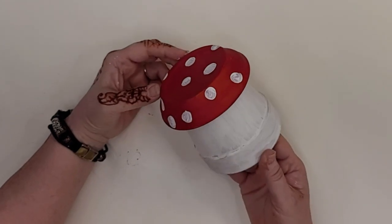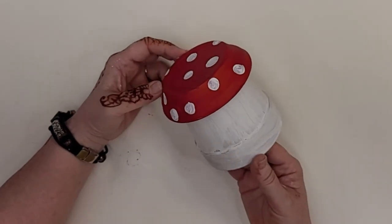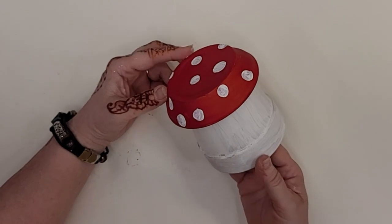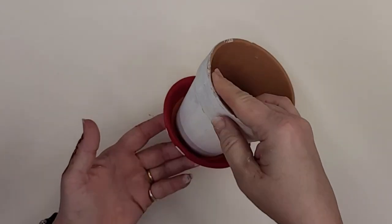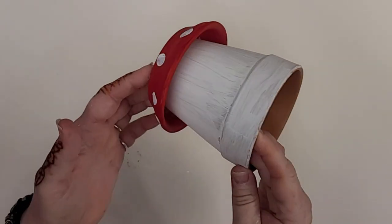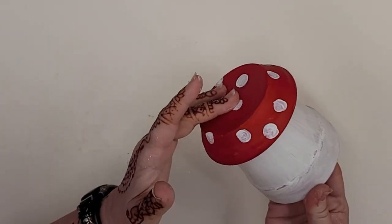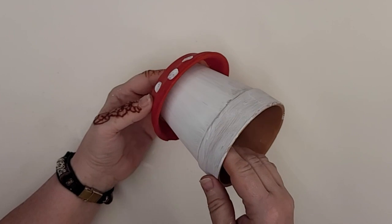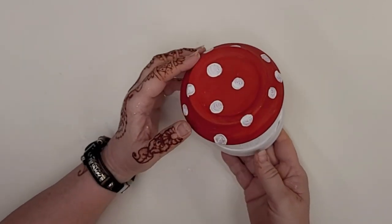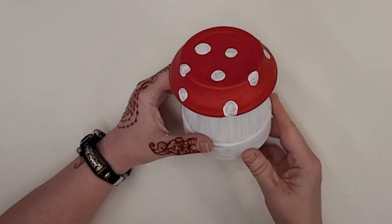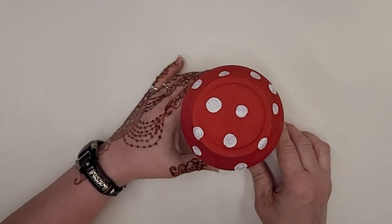So what we're making today is this adorable little mushroom. This is made out of a terracotta flower pot and a terracotta saucer. We've painted them and glued them together and you turn them upside down and it makes a cute little mushroom.